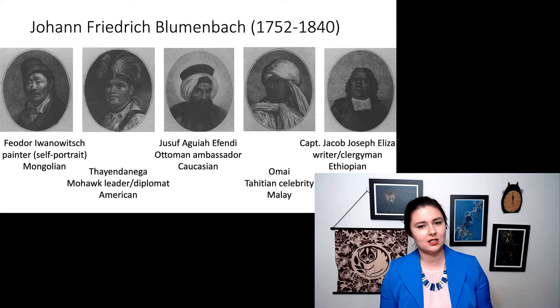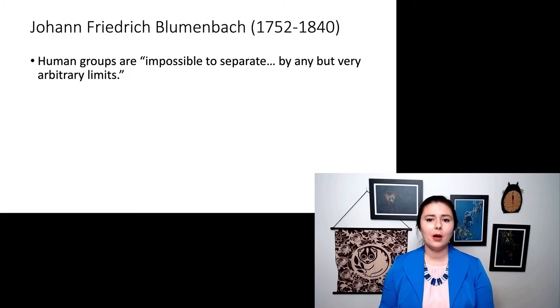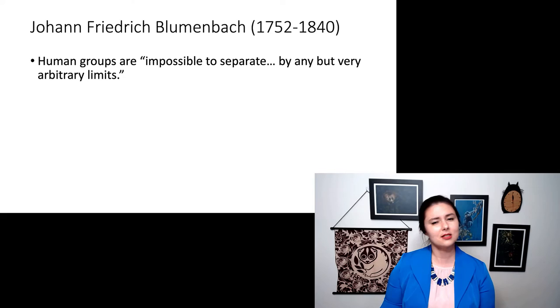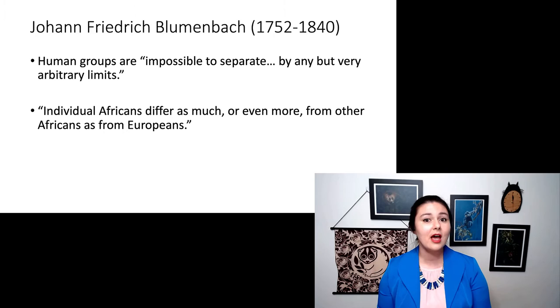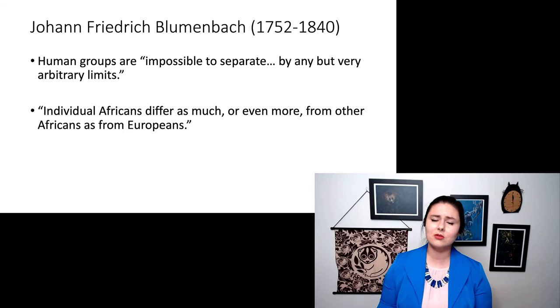One thing I do find confusing is Blumenbach did this, he created these five groups and he wrote about them, but he also said human groups are impossible to separate by any but very arbitrary limits. So I'm not quite sure what he was trying to say because he's making two contradictory statements. And he also noticed that individual Africans differ as much or even more from other Africans as from Europeans. And this is something we see today when we look at genetic studies. So he was definitely in the right direction, but even so he still named five different races of humans.